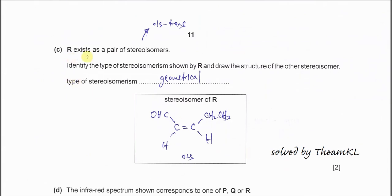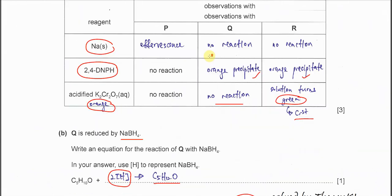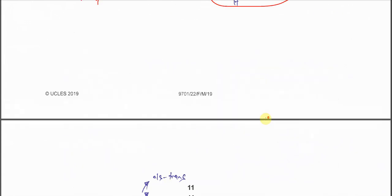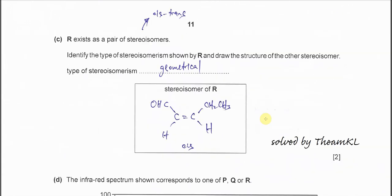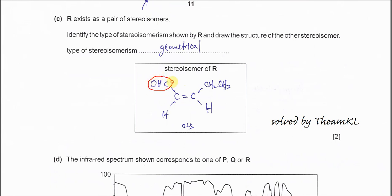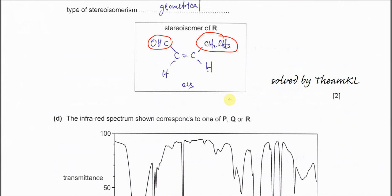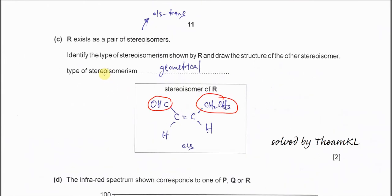Part C. R exists as a pair of stereoisomers. I told you already just now, R can form cis-trans. That one is a trans isomer. So you have to draw the cis. So you just need to switch the larger group to another side. So you can get the cis isomer. This is a cis isomer. The two larger groups on the same side now. And of course, the type of isomerism is geometrical.